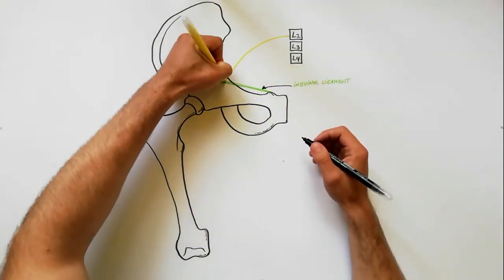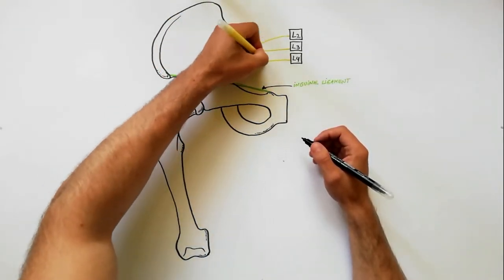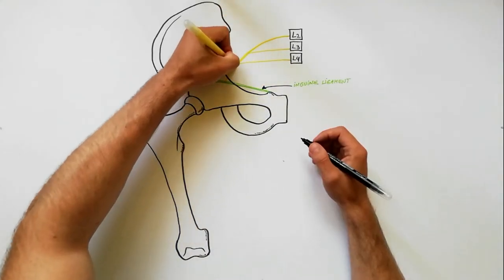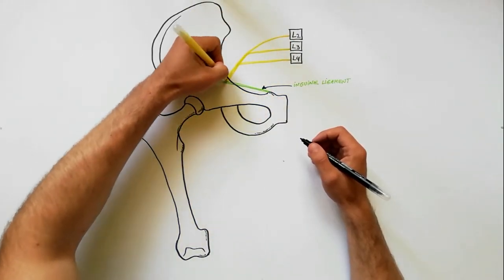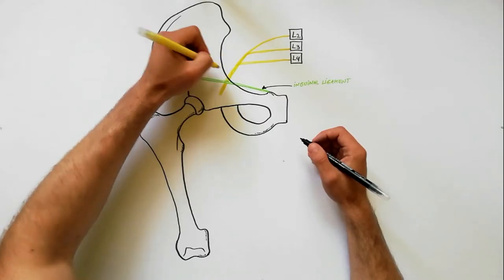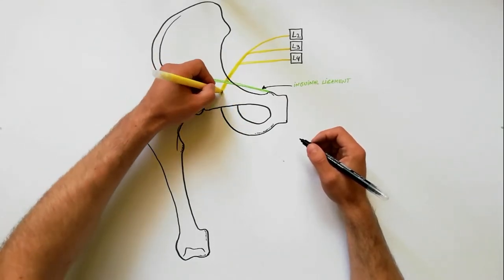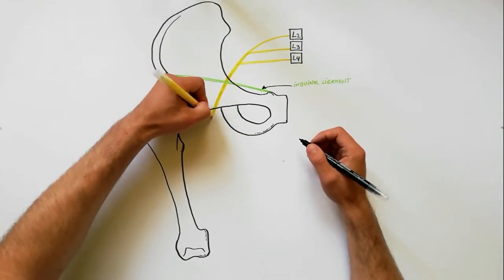The femoral nerve is the chief nerve of the anterior compartment of the thigh. It is the largest branch of the lumbar plexus and arises from the dorsal divisions of the anterior primary rami of L2, L3 and L4 nerves.